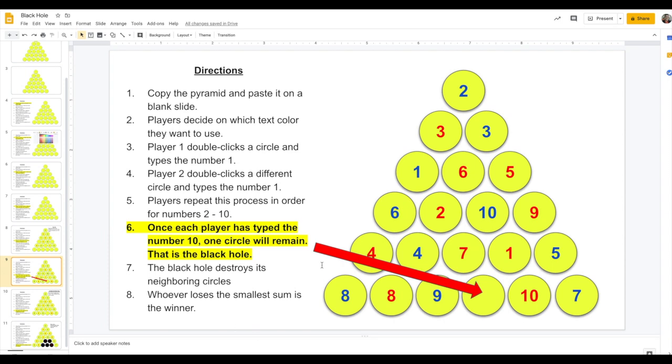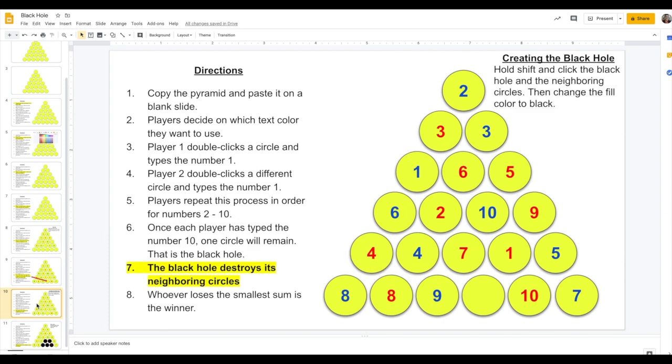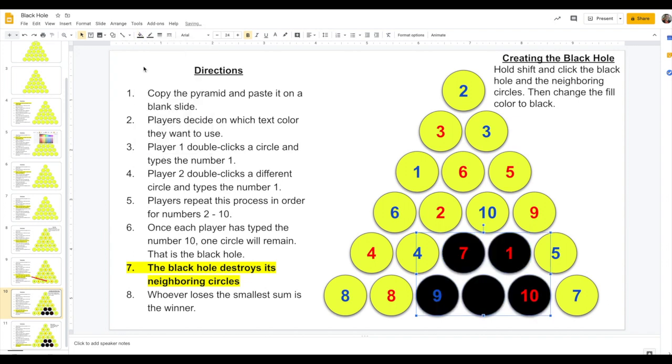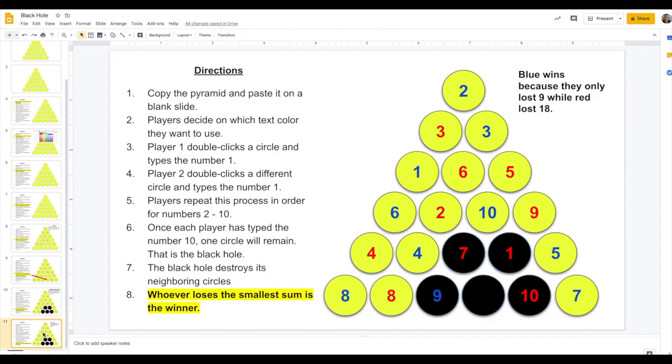After 10 rounds, there will be one circle that is left unfilled. That is the black hole. And so the black hole destroys all its neighboring numbers. To make that work, you're going to hold down the Shift key, select the black hole, and select the neighboring circles. Just click on each circle, and then go over to the Fill button and click the black.